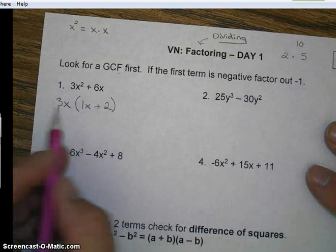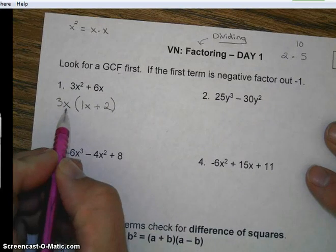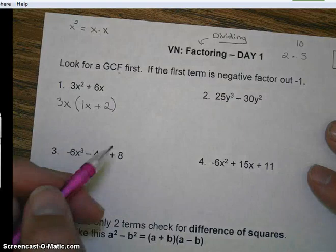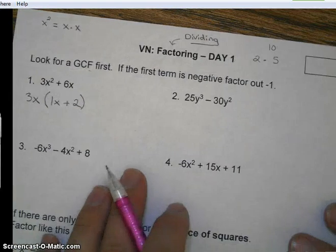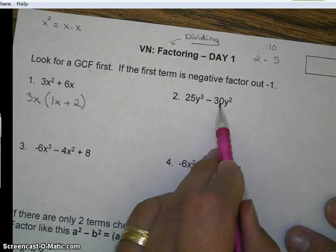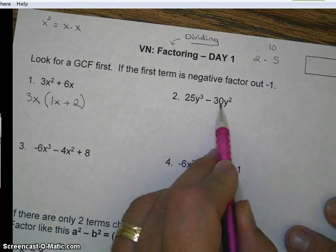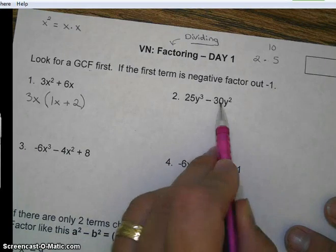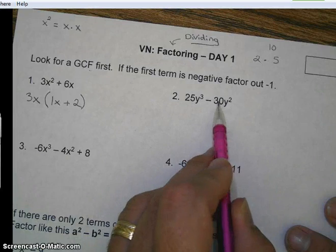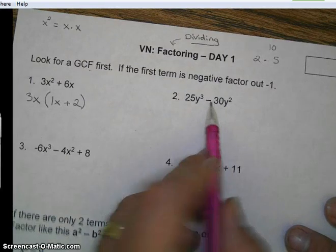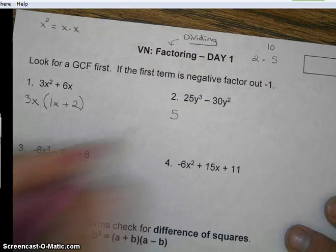3x is one of the factors. x plus 2 is the other factor. Let's take a look at number 2. So let's start with the numbers. What can we factor out of both of these? In other words, what number goes into both of those evenly? I think 5 sounds good. Anything bigger? Nope. Write it down.